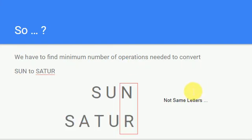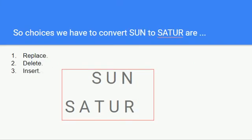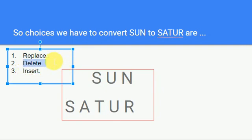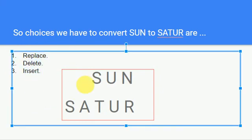When the two letters are not equal, we are left with three choices — just like the two-robots problem. We can either insert a character, delete the existing character, or replace the character.